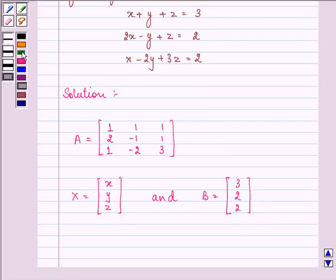So the following system of linear equations can be written as matrix A times matrix X equals matrix B.